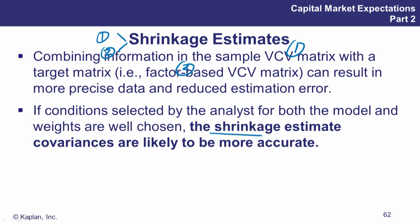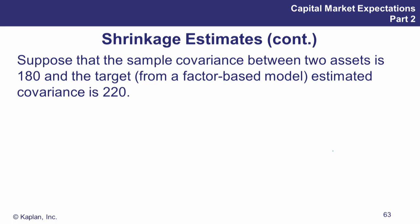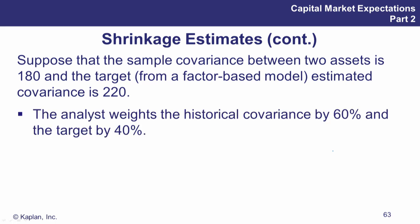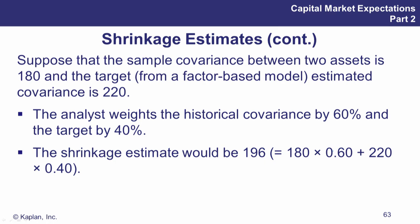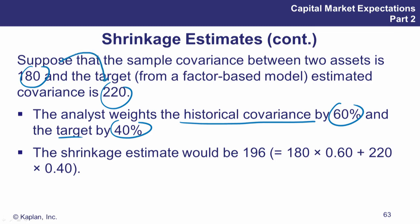Quite a few times in our economic area, we've used the term shrinkage, where you combine two forecasts. Combining a forecast in the matrix with perhaps a target matrix - more like a factor-based one - maybe a combination is more precise. This idea of shrinkage is two heads better than one, two forecasts better than one. We're going to take a weighted average of the two forecasts to get a bit more accurate. You've seen this before in other parts of economics - one was in estimating volatility. Here's the same idea: the shrinkage is we're going to take a weighted average. The historical covariance is weighted at 60, the target at 40. The sample covariance is 180 and from the factor model is 220. So rather than rely on any one of those individually, we take a weighted average, and that ends up being 196 - somewhere in the middle.